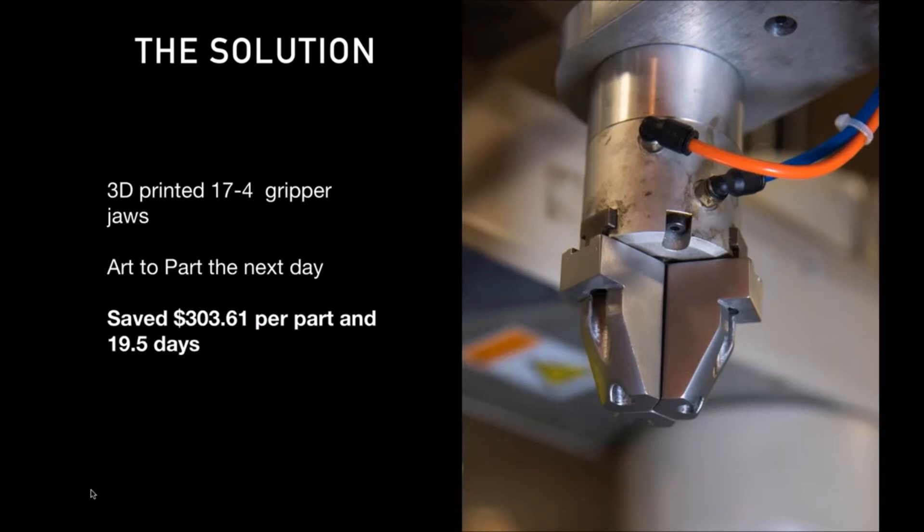Let's look at the solution. The solution is 3D printed 17-4 gripper jaws. With the 3D printing metal technology from Markforged, they're able to go from art to the part itself the next day. They save $303 per gripper jaw. That means over a thousand dollars per robot arm installation. They save on average against their machine shop 19.5 days of time.